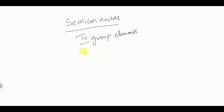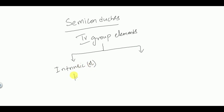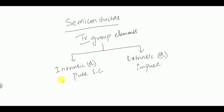Semiconductors are basically fourth group elements, and they are classified into two types. One is intrinsic or pure semiconductors, and the second classification is extrinsic or impure semiconductors.